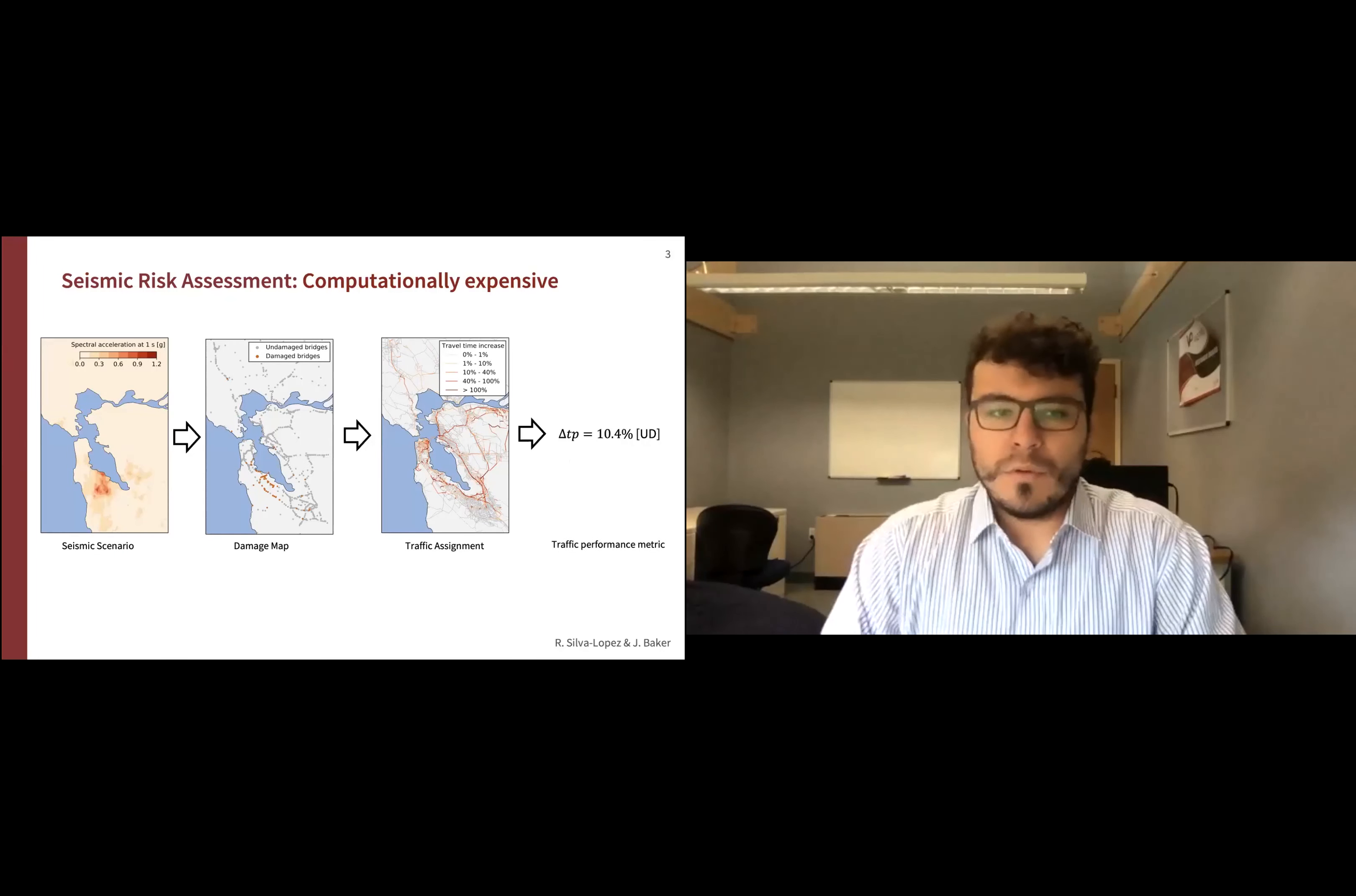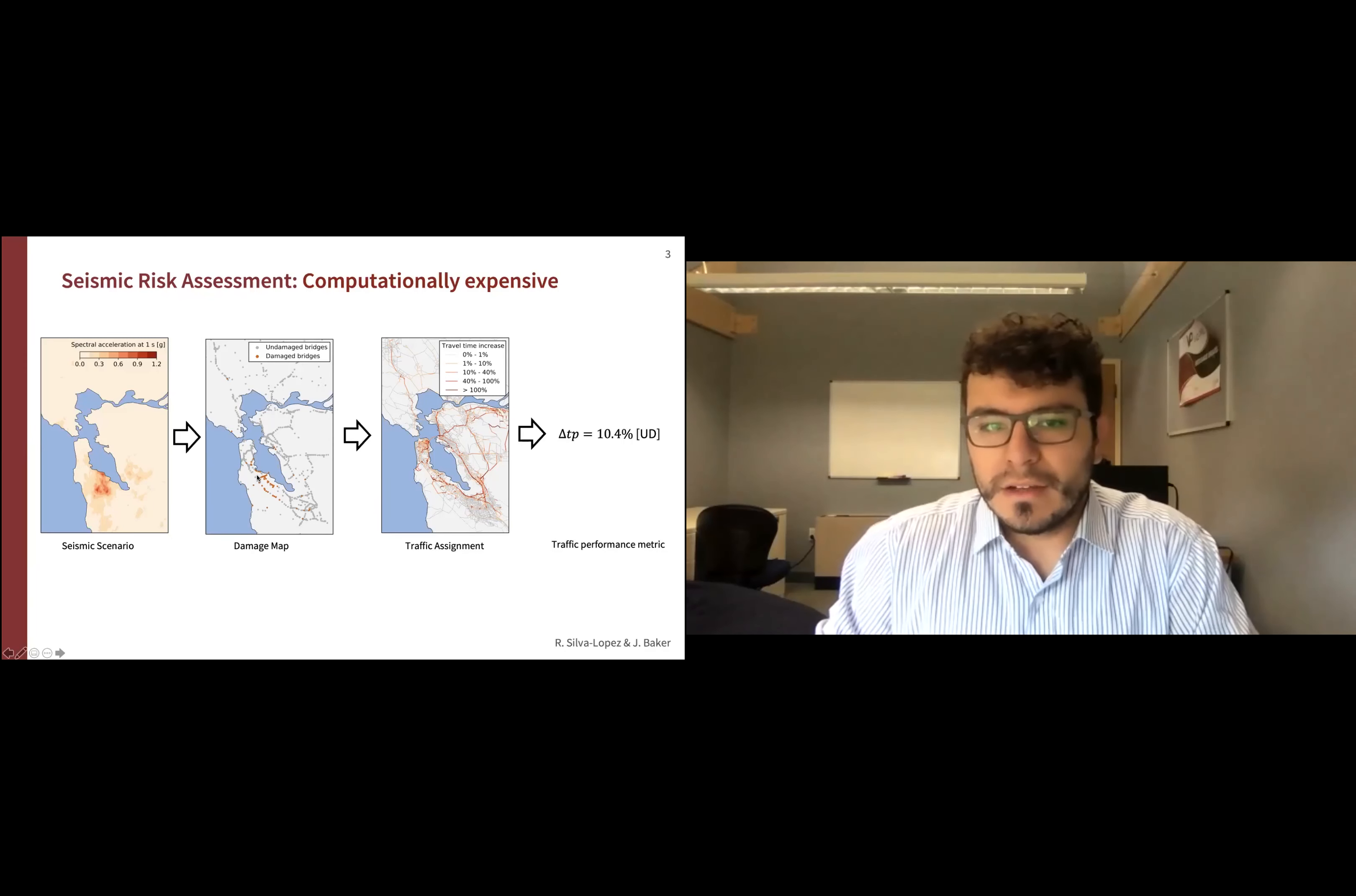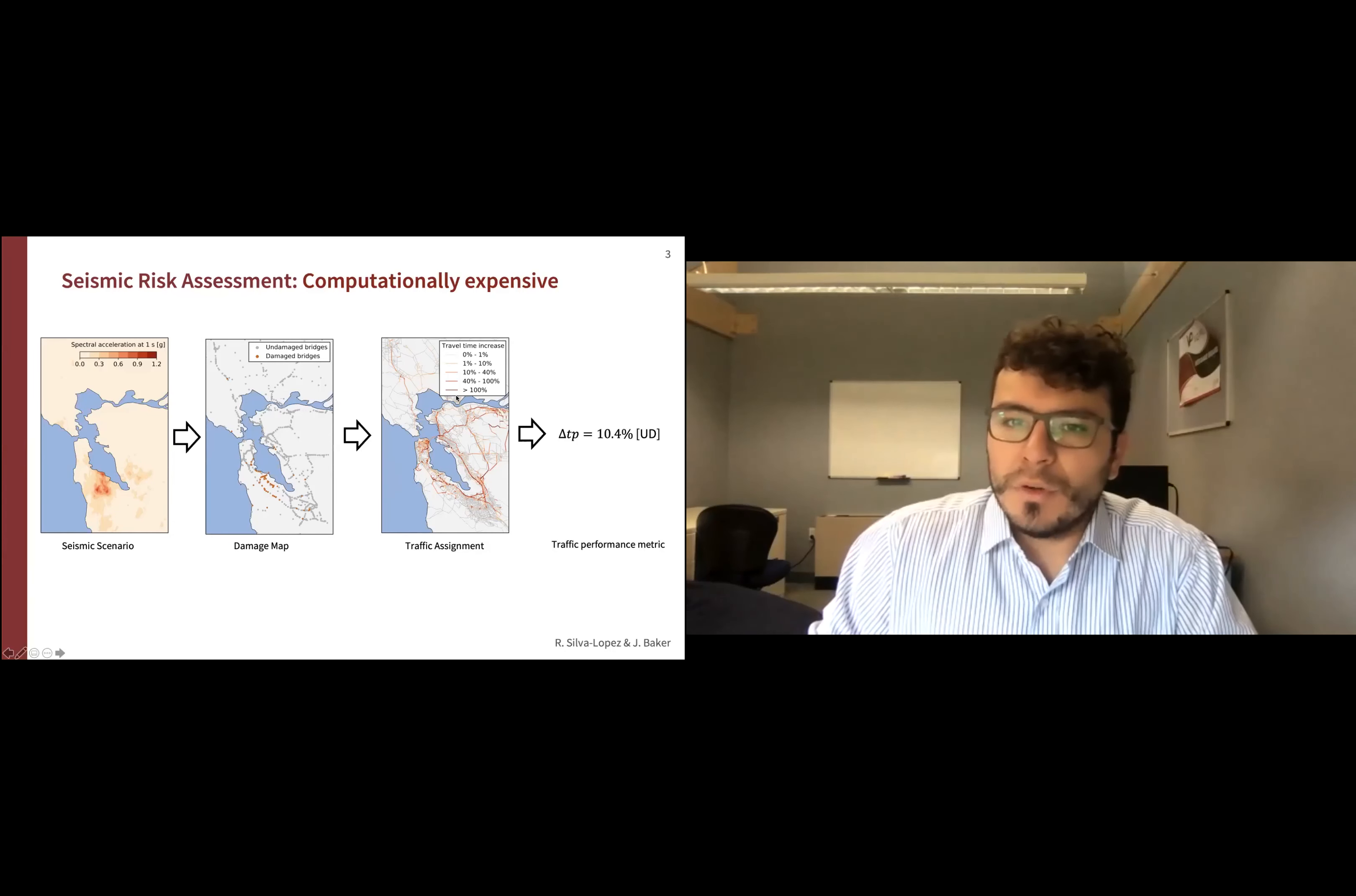As an example, seismic risk assessment is a computationally expensive process. Here I'm showing how this process is performed. Given a seismic scenario defined by values of intensity metrics at locations of interest, which in this case are bridges, we can use that information to obtain realizations of damage for each individual bridge using their fragility functions. Given the information of which bridges are damaged, we can define whether or not the bridge is functional. Despite the network being damaged, commutes still need to be performed.